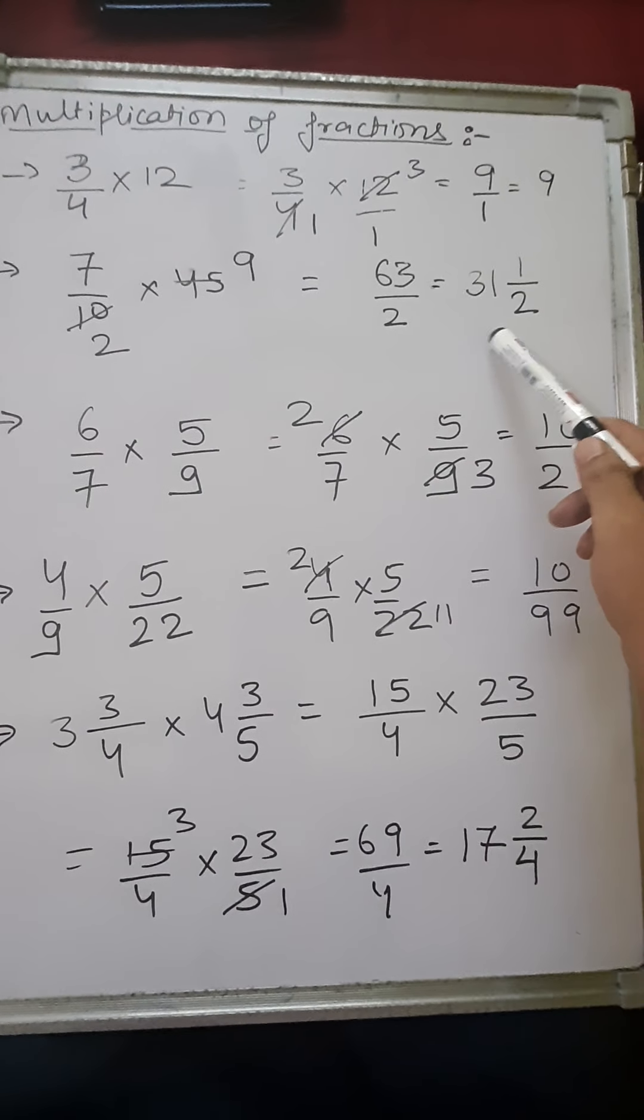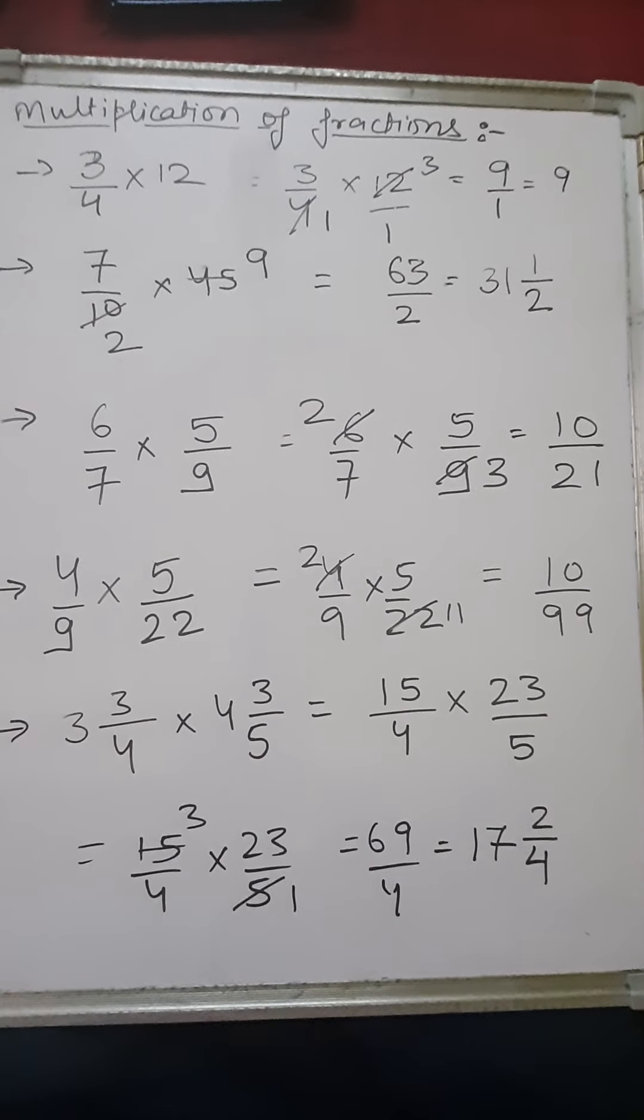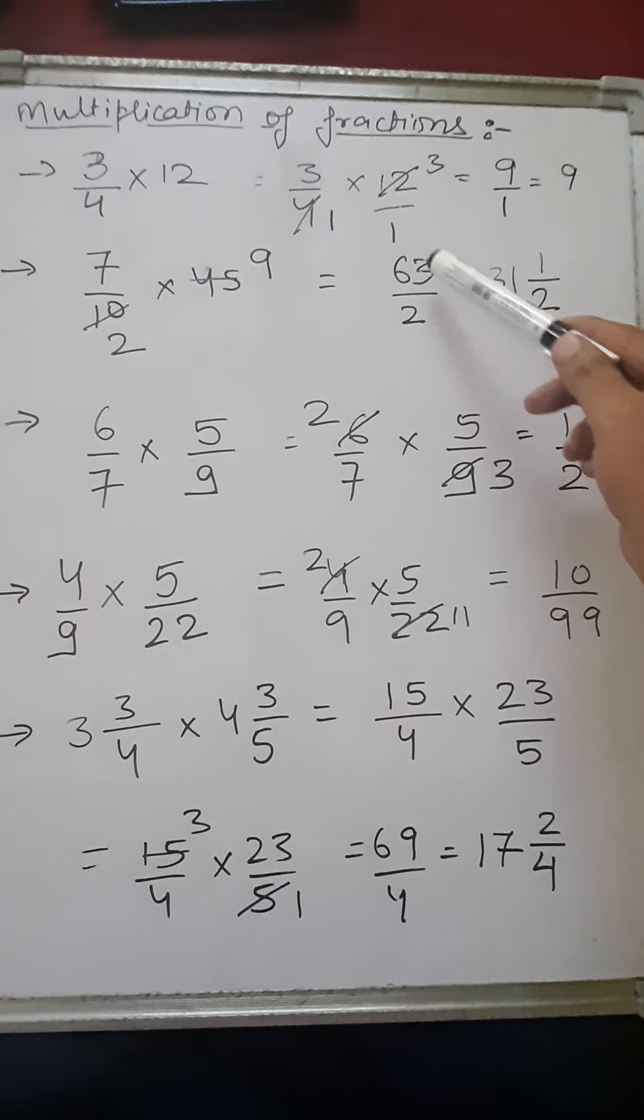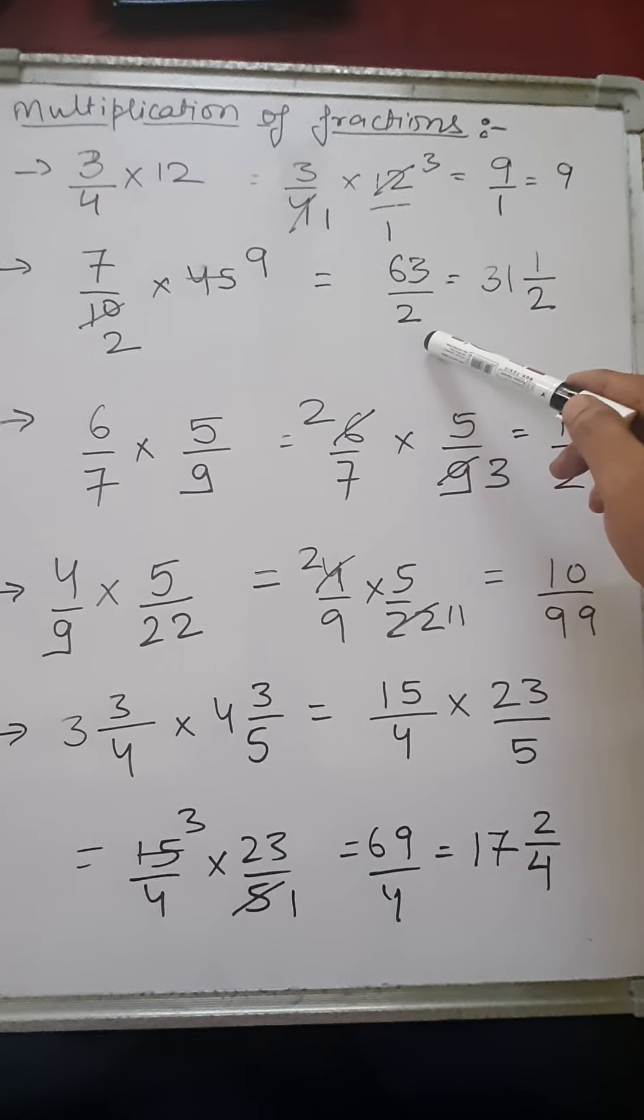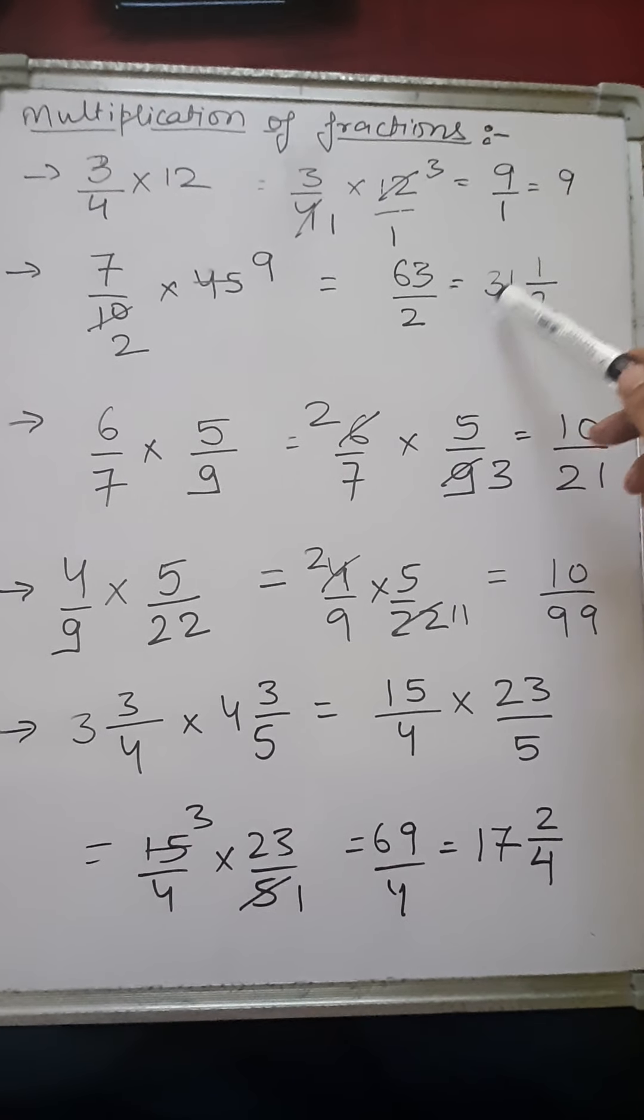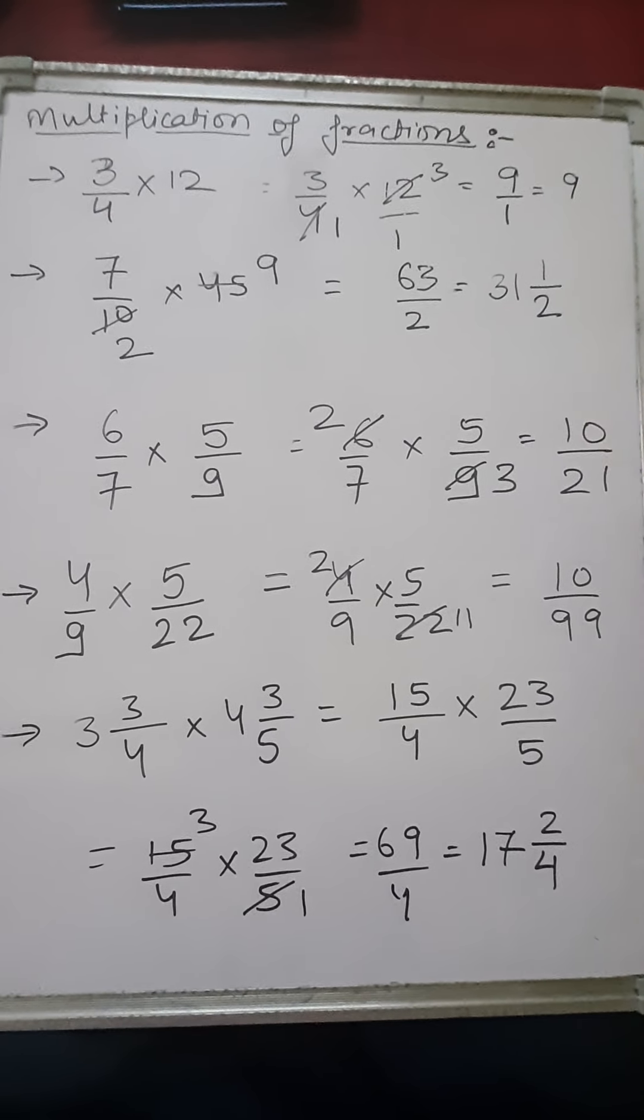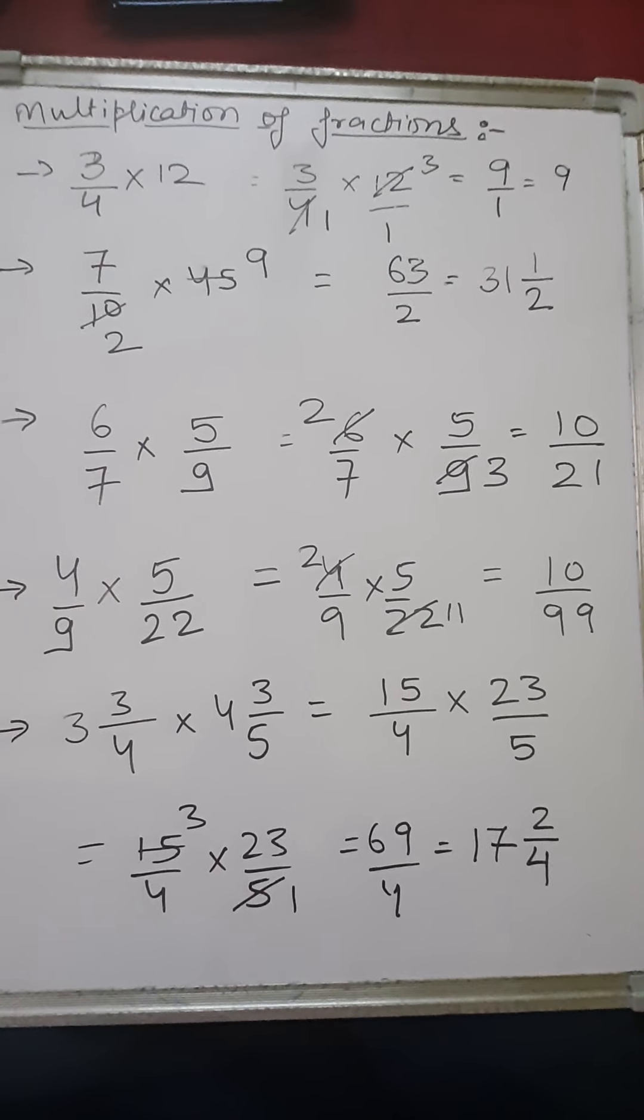And the result will be 31 wholes 1 by 2. We divide this numerator by 2. This is an improper fraction and this result will be quotient wholes remainder upon divisor. Let's discuss another sum.